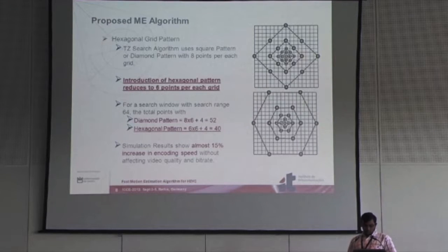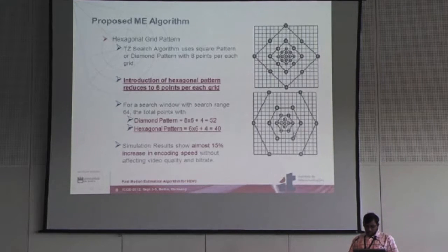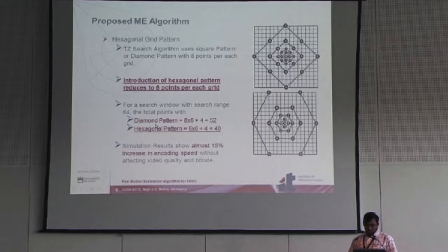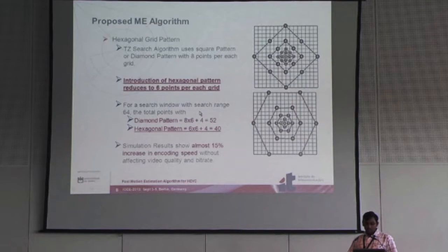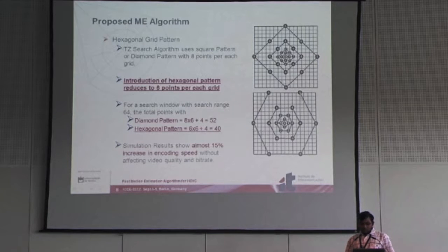What we have proposed is a hexagonal pattern instead of the diamond pattern used in TZ-Search. If you look closely at the diamond pattern, it has 8 points per grid. With the hexagonal pattern, there are only 6 points per grid. For a search range of 64, the diamond pattern has 52 total points per block while the hexagon has 40 points. We achieved a 15 percent gain in total encoding speed without significantly affecting bit rate or video quality. Hexagonal patterns exist in previous algorithms but not in TZ-Search.